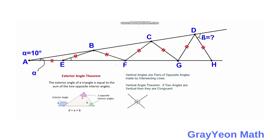For this problem we are going to use two theorems. The exterior angle theorem states that the exterior angle of a triangle is equal to the sum of the two opposite interior angles. In this example, the opposite interior angles are a and b, and their sum is equal to d, which is the exterior angle.